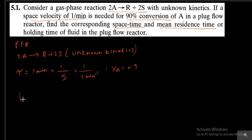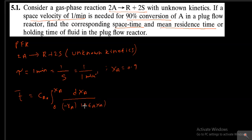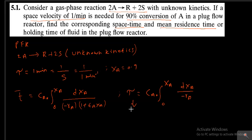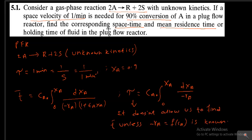What is T-bar for the plug flow reactor? From the performance equation, T-bar equals CA0 times the integral from 0 to XA of dXA divided by (-rA)(1 + εA·XA). This tau does not allow us to find T-bar unless -rA as a function of concentration is known. So tau equals 1 minute, but with unknown kinetics we cannot find T-bar.